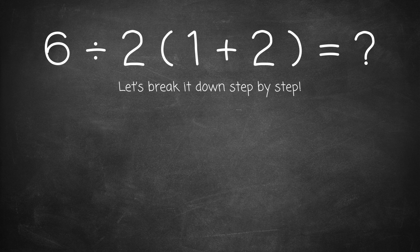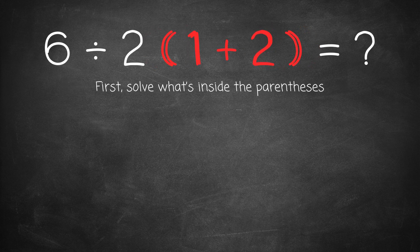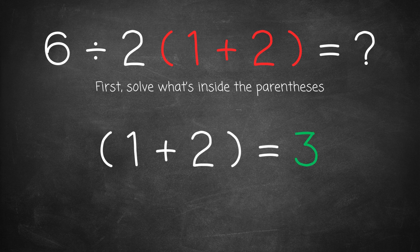Let's break it down step by step. First we solve what's inside the parentheses. 1 plus 2 equals 3.